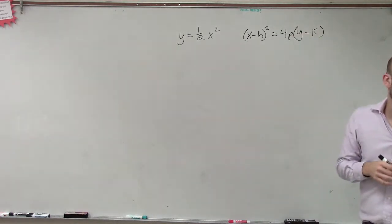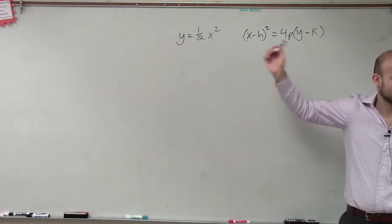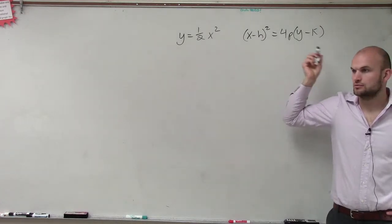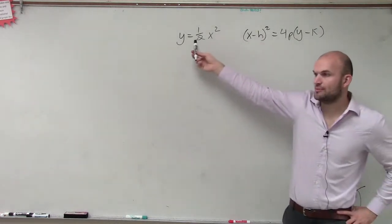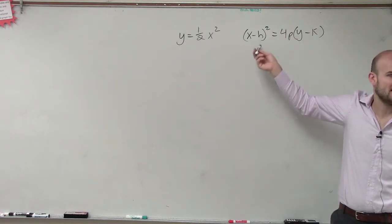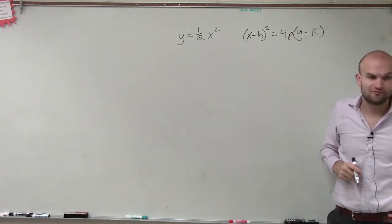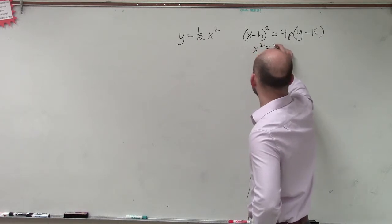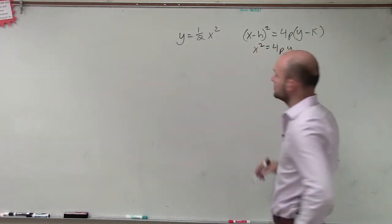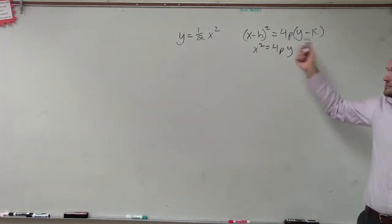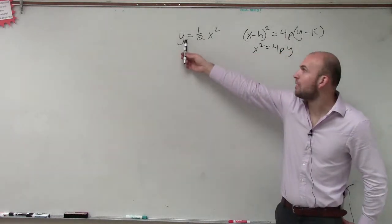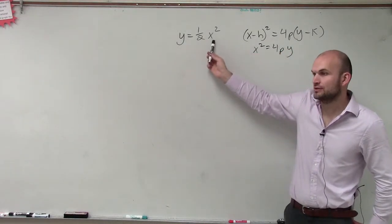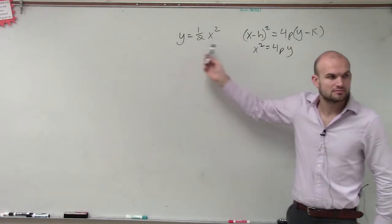However, ladies and gentlemen, do we have an h and a k? Are we subtracting anything? Are we in this formula? Am I subtracting anything? No. So h and k are zero, right? So we can say the vertex is at zero. So therefore, I'm going to say our standard form will look like this. h and k are zero. There's no y minus something or x minus something, right? So it's zero, zero comma zero.